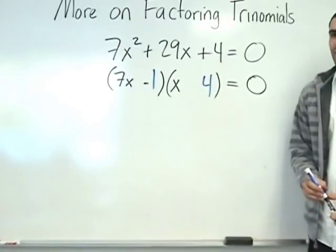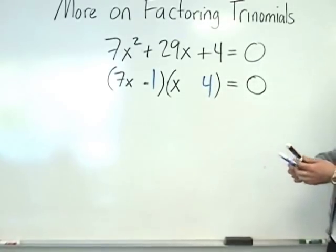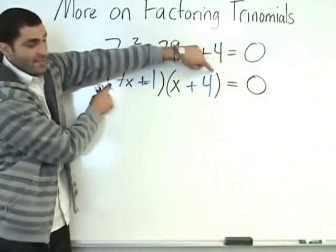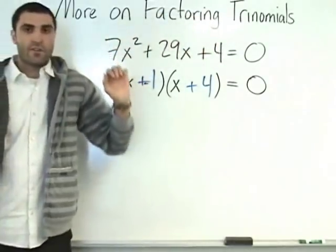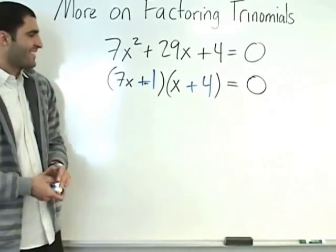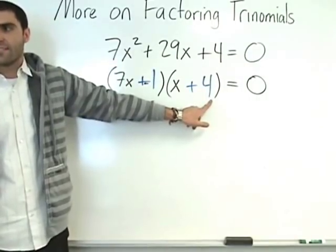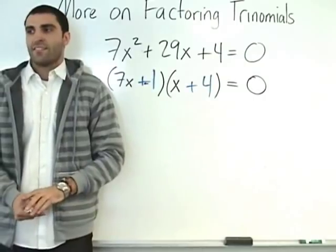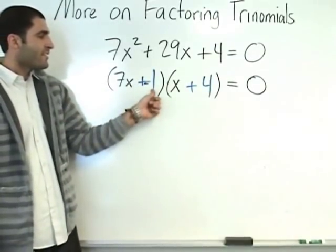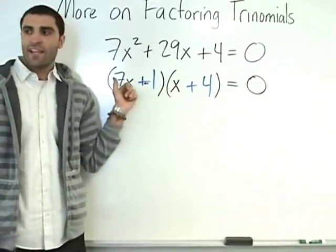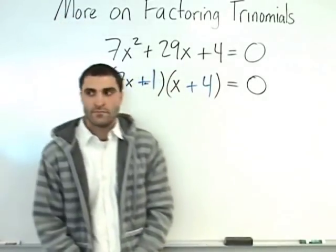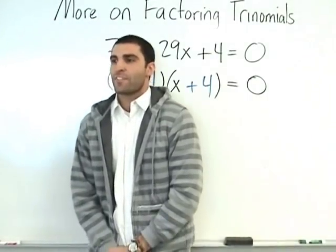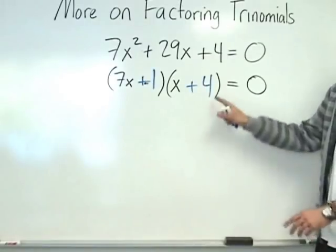So let's make it plus plus and foil to check: 7x squared, 28x, x makes 29x, and 4. The reason you put the 4 in the second parenthesis is because it's bigger, so it multiplies with the 7 to make 28, and all we need is one more to make 29. If you put the 4 in the first parenthesis, it wouldn't be multiplied the same way — it depends what the middle term is. You put the bigger number wherever you need to.